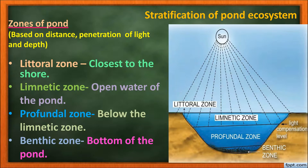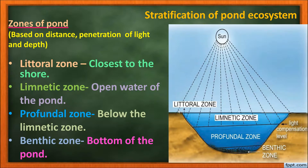Based on factors like distance, penetration of light, and depth, the pond can be divided into different zones: littoral zone, limnetic zone, profundal zone, and benthic zone. The topmost zone is the littoral zone — it is closer to the shore with very shallow water, allows easy penetration of light, is warm, and is occupied by deep-rooted plant species. The next zone is the limnetic zone, which refers to open water with effective penetration of sunlight, where planktons dominate.